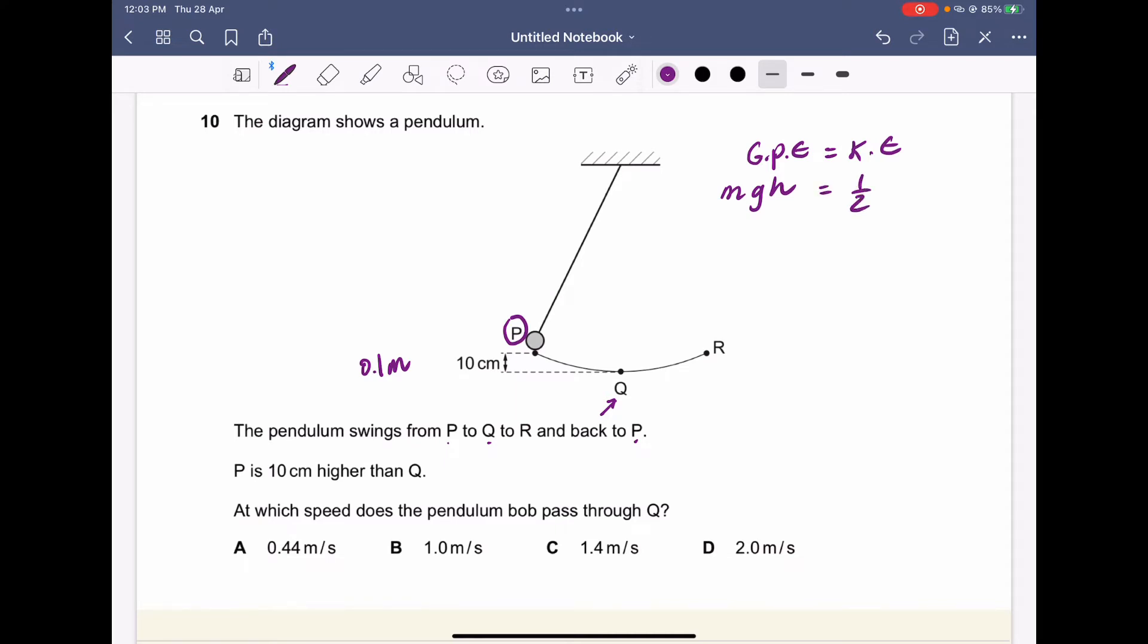Cancel out the masses, not needed, and times two for both sides. So two cancels with the two, so 2gh equals v squared. Therefore v equals square root 2gh.